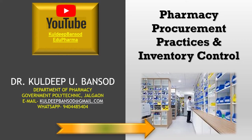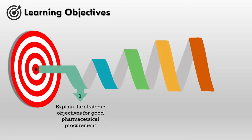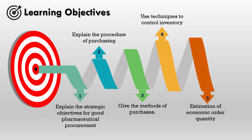Let's see the learning objectives. After going through this learning dialogue, viewers will be able to explain the strategic objectives for good pharmaceutical procurement, explain the procedure of purchasing, give the methods of purchases and select the suitable method for procurement, then use the techniques to control inventory and estimation of economic order quantity to manage inventory. Let's see them one by one.